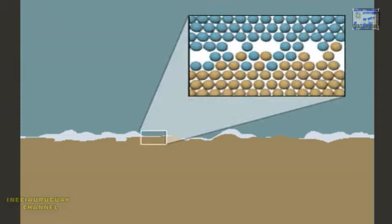Heavier objects create more friction, because they increase the pressure between two surfaces. This increases the number of bumps that come into contact, and the number of bonds that form between atoms and molecules.